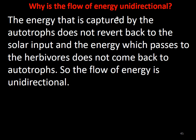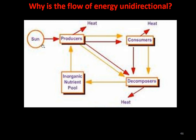Why is the flow of energy unidirectional? The energy captured by autotrophs — the plants — does not revert back to the solar input, and energy which passes to herbivores does not come back to autotrophs. So the flow of energy is unidirectional. The sun gives energy to producers by photosynthesis, which is then taken by consumers, then decomposers, and inorganic nutrients are taken by producers again in the presence of sunlight.